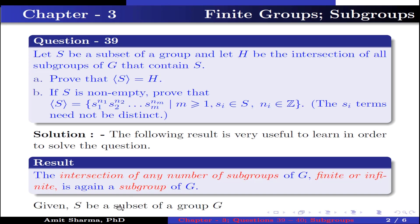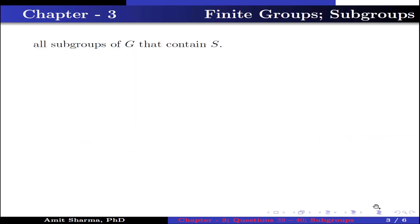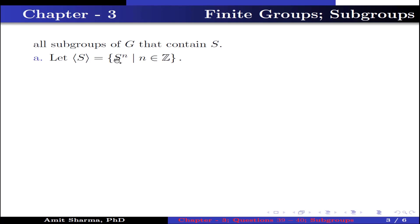Given S be the subset of a group G and H be the intersection of all subgroups of G that contain S. Part a: let the set generated by S equal s^n, where n belongs to ℤ.